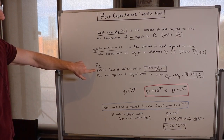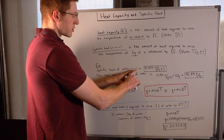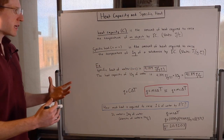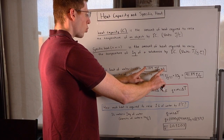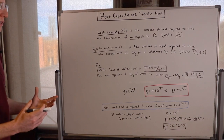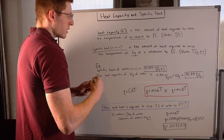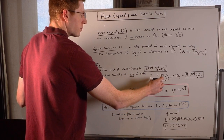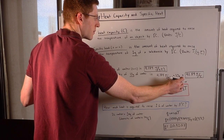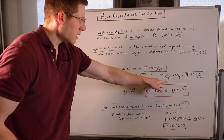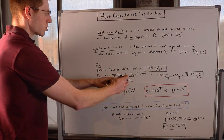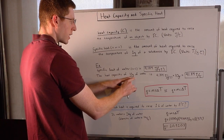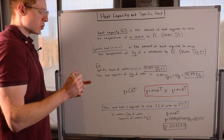You can look up on a table that the specific heat of water — the lowercase s or lowercase c — is 4.184 joules per grams times degrees Celsius. This is the amount of heat required to raise the temperature of one gram of water by one degree Celsius. But if we wanted the heat capacity for ten grams of water, we multiply the specific heat by ten grams. The grams cancel out, and we find that the heat capacity of ten grams of water is 41.84 joules per degree Celsius.